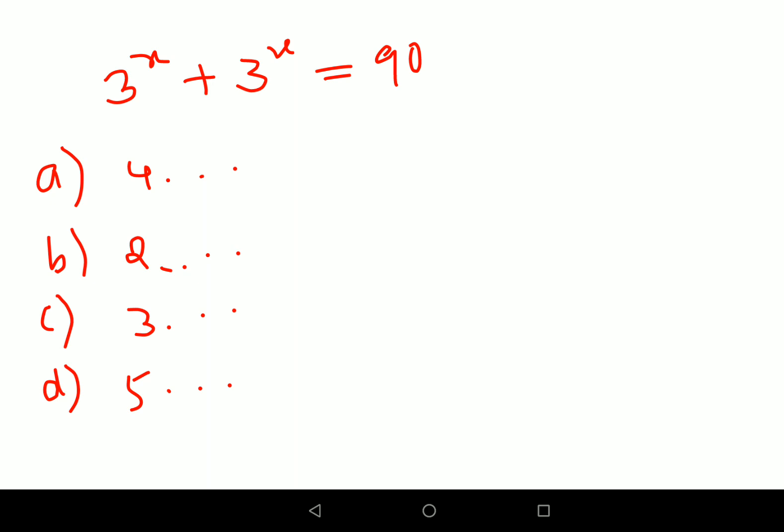So 3^3 gets you 27 + 27, that gets you 54. And 3 point something could come to the value of 90. Now 3^4 itself is 81 + 81, which is much bigger than 90. So by default you should have selected c as your answer.